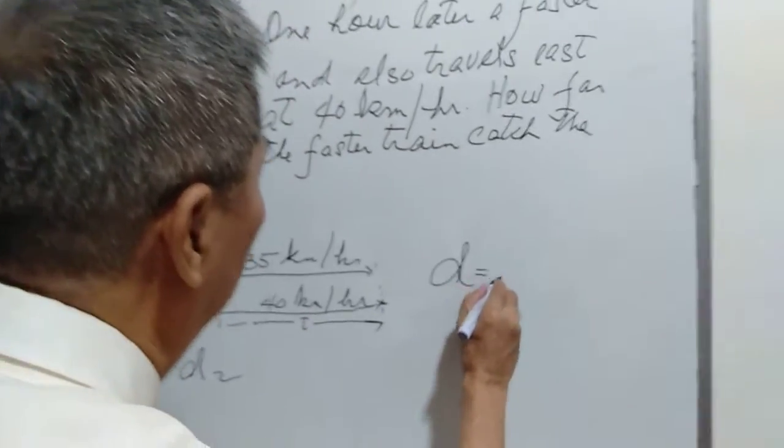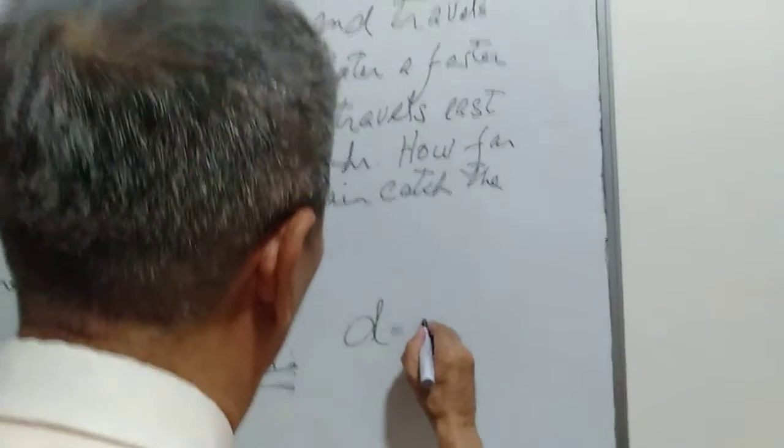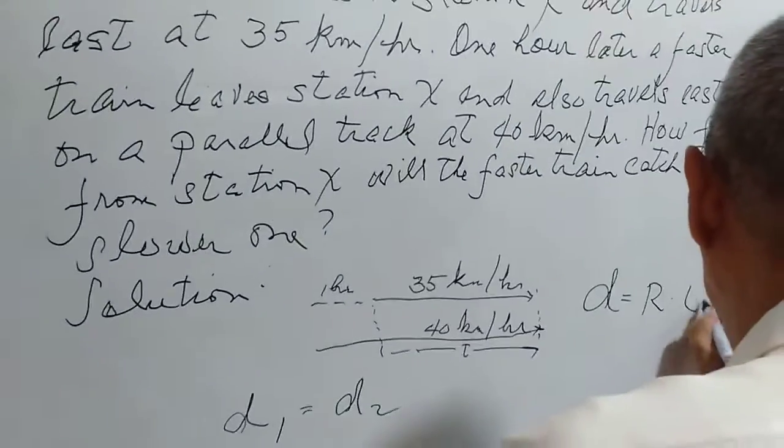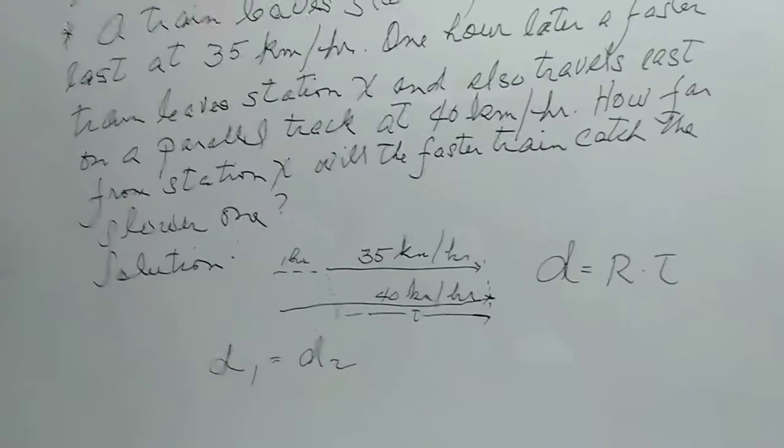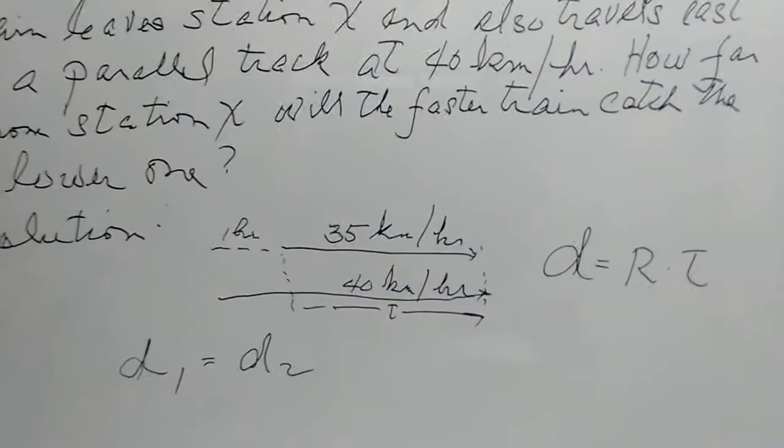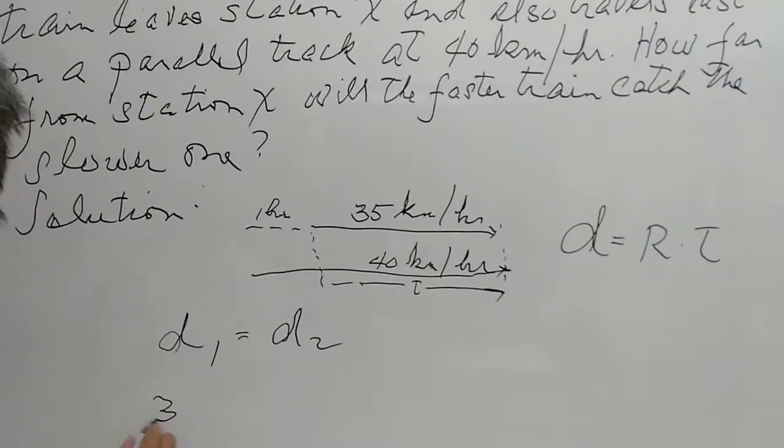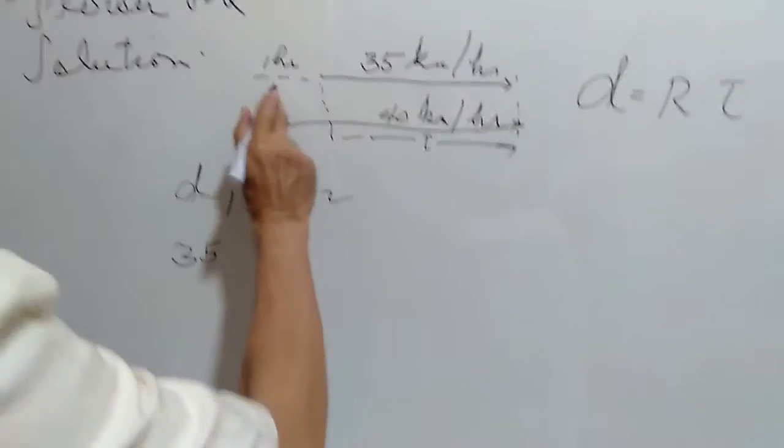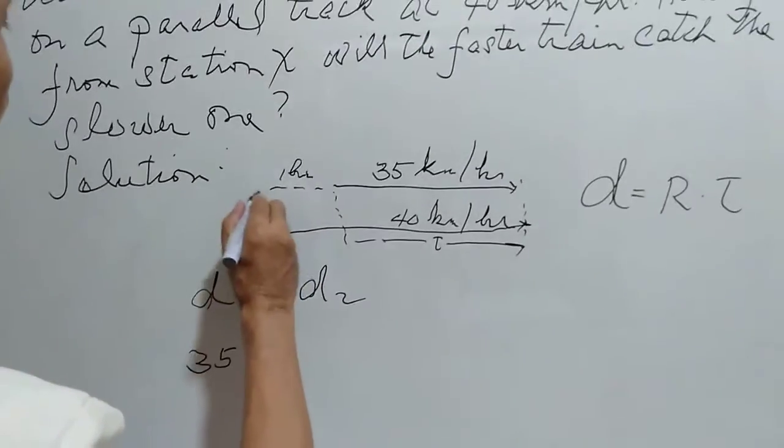D is equal to rate times time. So the rate of the slower train is 35 kilometers per hour, and the time consumed from this point here, from station X to this point...